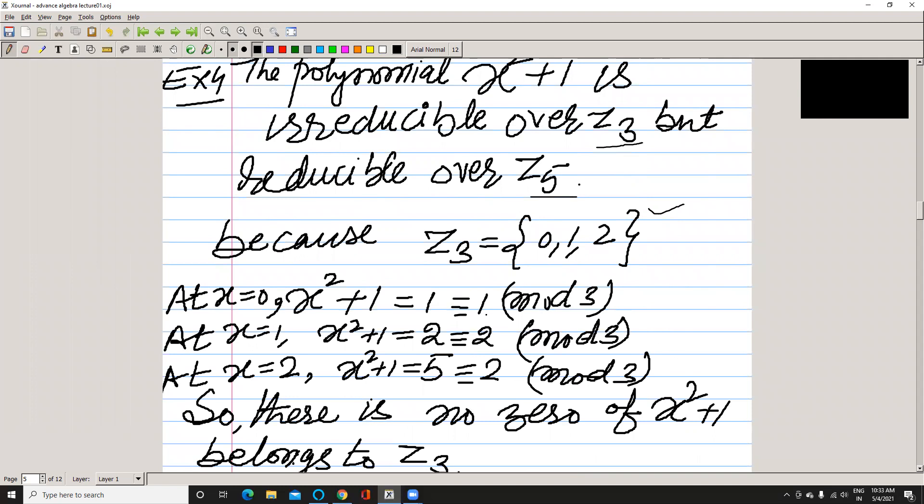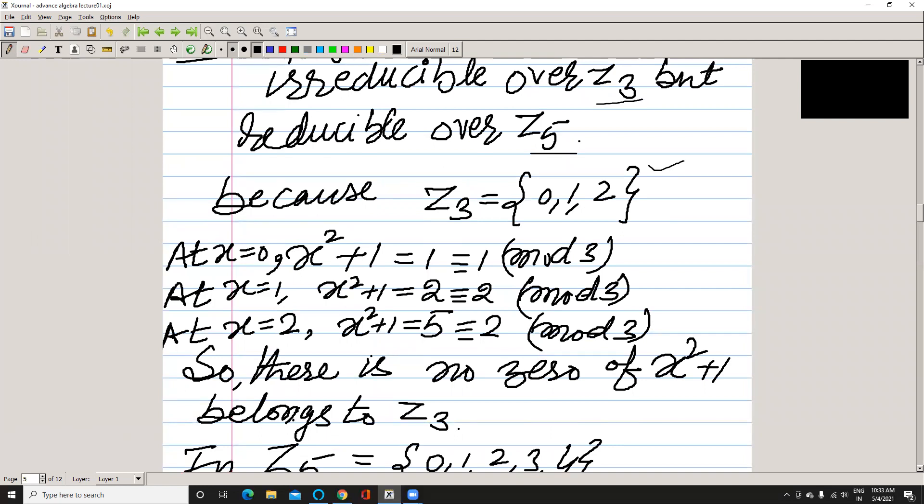If I put 0 in this polynomial, it equals 1. At x = 1 it's 2, and at x = 2 it equals 2 modulo 3. Clearly there is no zero element. There is no zero in Z₃, so this polynomial is irreducible over Z₃.